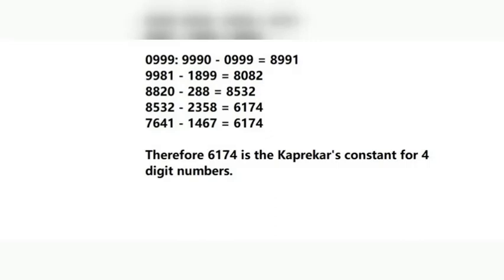We repeat the process with 8082. Rearranging 8082 in descending order gives 8820, and in ascending order gives 2088. The difference is 6732. Repeating again with 8532: rearranged in descending order as 8532 and ascending order as 2358. The difference between 8532 and 2358 is 6174.